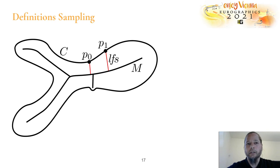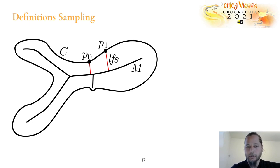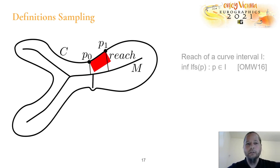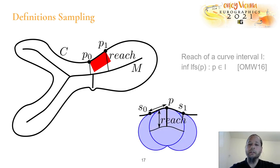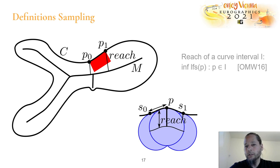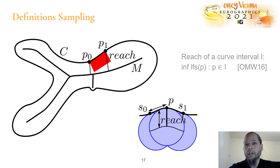We can also make a different sampling definition. For points P0 and P1, the local feature size differs quite a lot. If you want something that is constant over a curve interval, we can take the smallest local feature size along this interval for any point of the interval — this is called the reach. The empty disks for the reach are of constant size between sample 0 and sample 1 of the curve. We will see later that this is important for sampling guarantees.